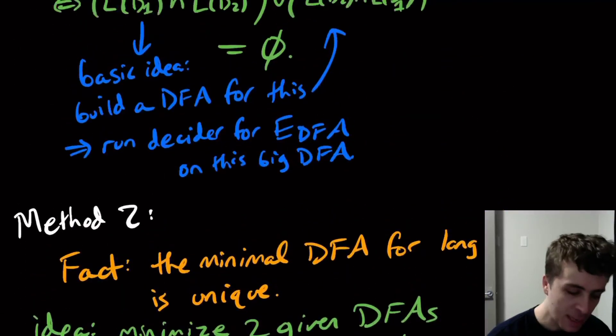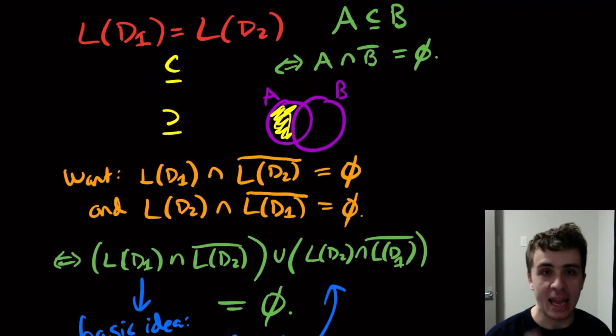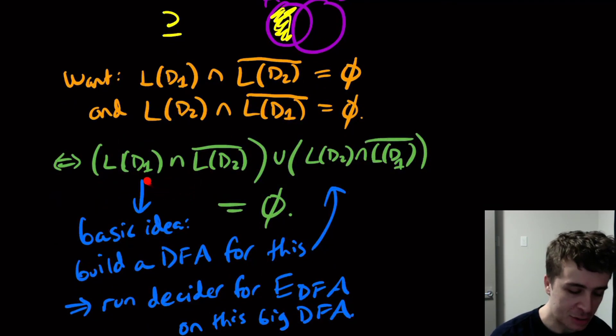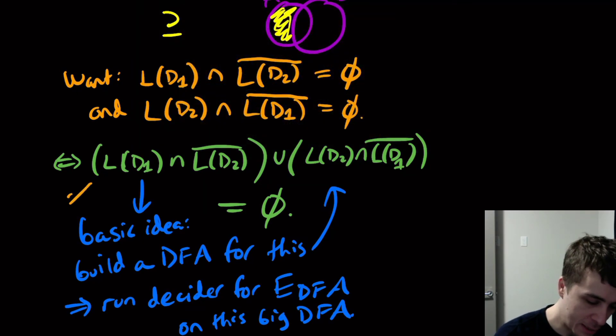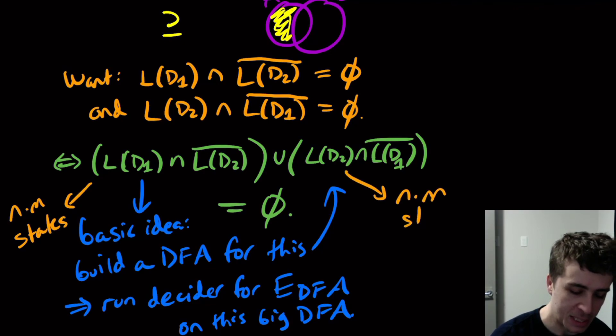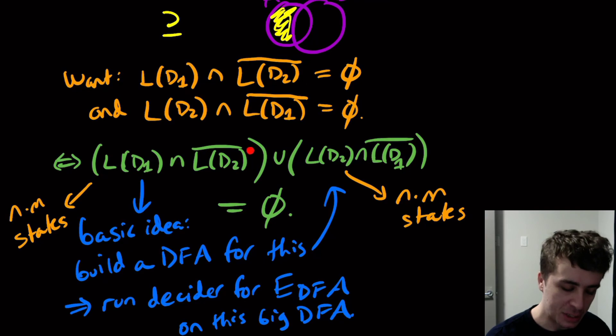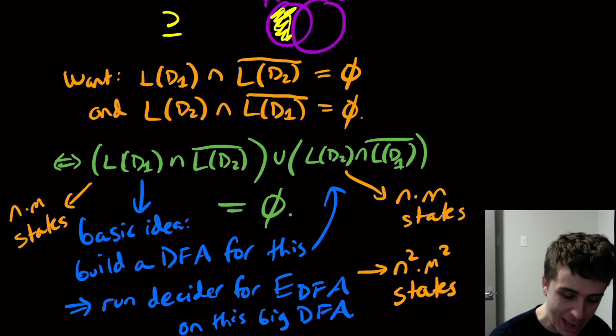Whereas up here, if the number of states was, let's say n and m, then the number of states right here would be n times m. This right here is n times m states. This one is also n times m states, because the complement operation doesn't introduce any more states. Then the union right here in principle will have us multiply these two sizes. So at the end of the day, we're going to get n squared times m squared states, which is way, way, way, way less than 2 to the n in general. So this method is far superior in terms of the running time that is needed to solve it.